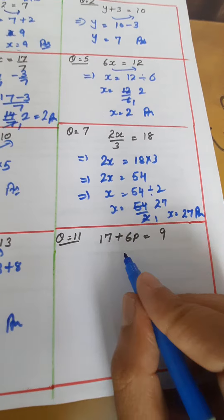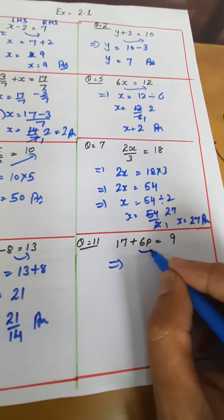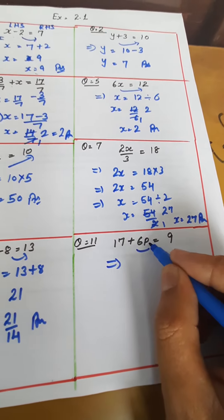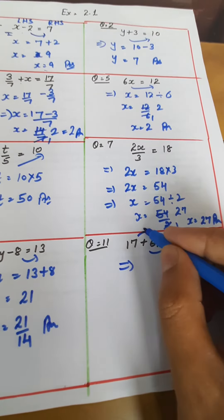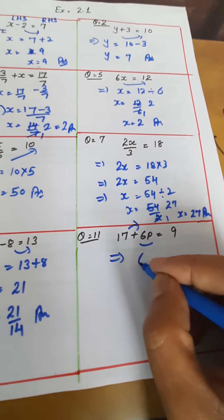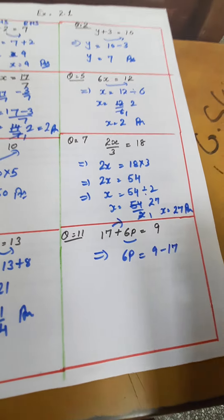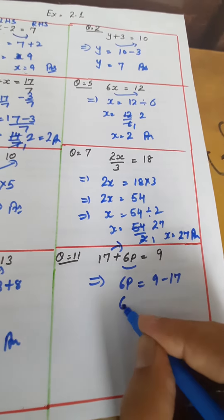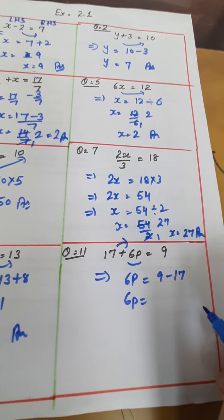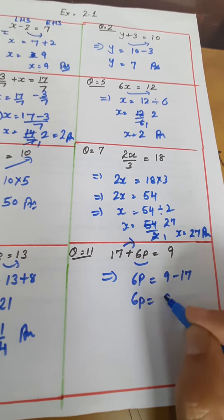It says 17 plus 6p equals 9. 6 into variable p. So we will transpose plus 17. It will be changing into minus: 9 minus 17. 6p as it is, 9 minus 17, that equals 8.